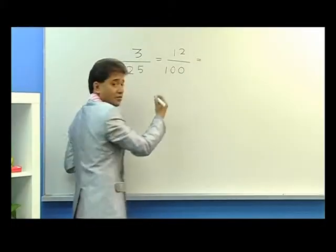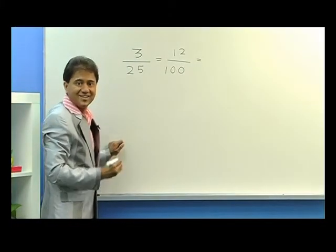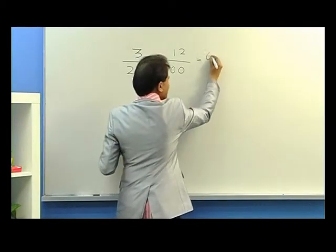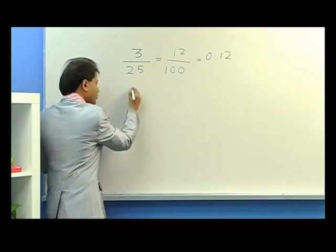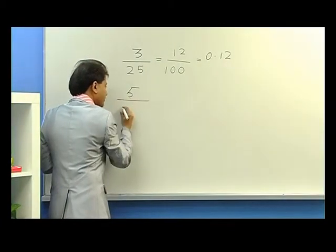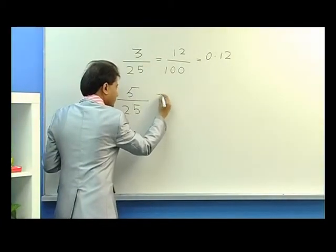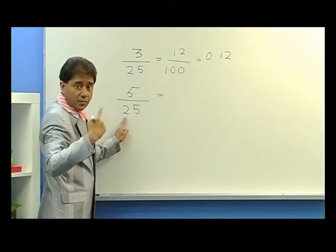And 12 over 100 is 0.12. Let's take another example: five over 25. This is 25, how do you make it hundred?